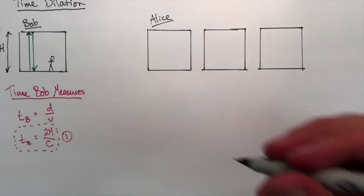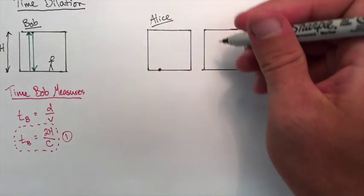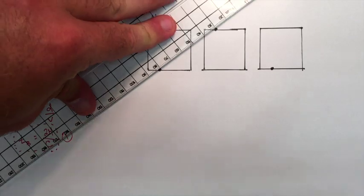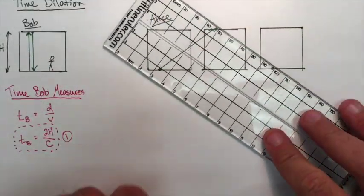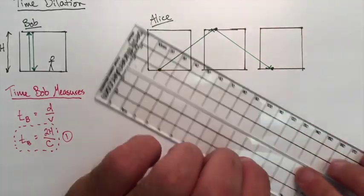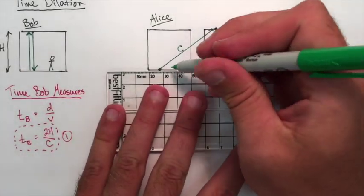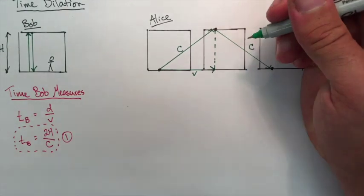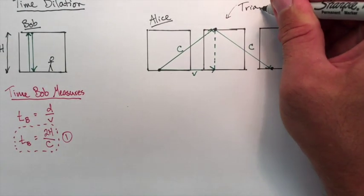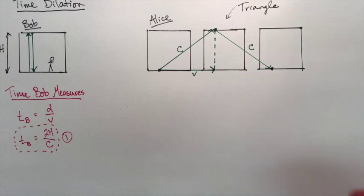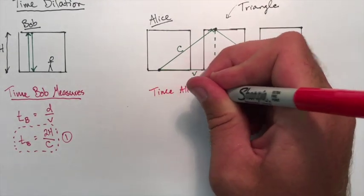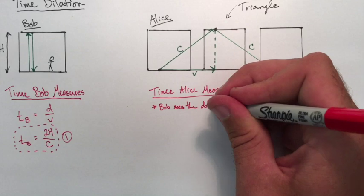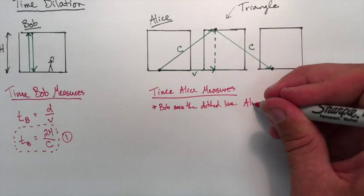Alice, on the other hand—if she's standing on the ground and she sees the spaceship go by, that's why there's three pictures, it's the spaceship at different time intervals—she'll see the beam of light travel from the bottom to the top and then back down to the bottom again. So she sees a triangle being made. We can show that the speed of the spaceship with its velocity v—we can represent that vector on the bottom, and it's going to match up exactly with the halfway mark. So what we want to do here is we want to see the time that Alice is going to measure. Just remember that Bob basically sees that dotted line, and Alice is going to see that triangle.